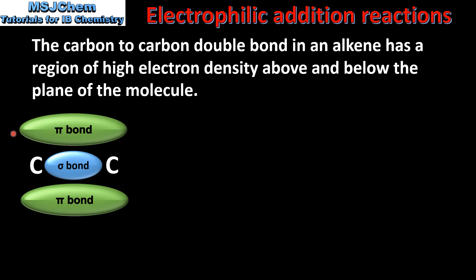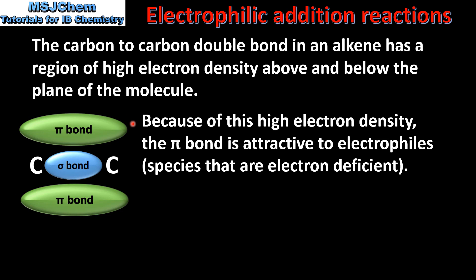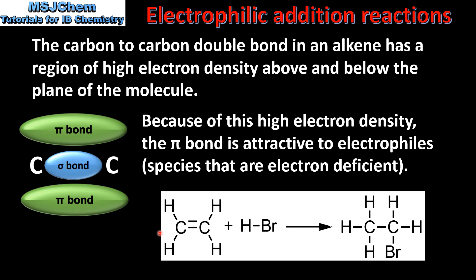The pi bond is the region of electron density above and below the plane of the molecule. Because of this high electron density, the pi bond is attractive to electrophiles, which are species that are electron deficient. Here we have an example of an electrophilic addition reaction between ethene and hydrogen bromide to form bromoethane. As you can see, the carbon to carbon double bond opens up and the hydrogen and bromine atoms bond to the carbon atoms.